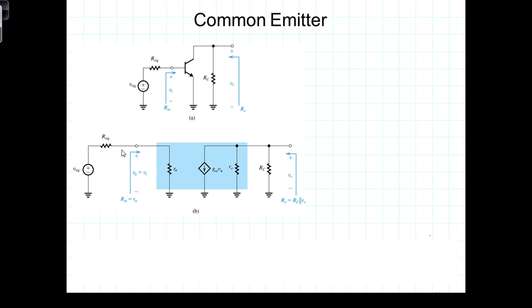The signal and its source are connected to the base and the output voltage is taken from the collector. The emitter, of course, is the common node.